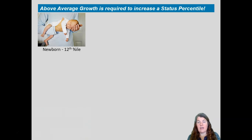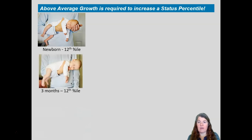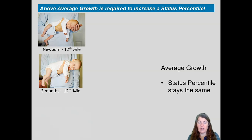Here we can see a photo of my child when she was born — a little tiny baby at the 12th percentile for length. So as parents, we were trying to get her weight and her length up. We take her back to the doctor at three months and we're pretty pleased — she's grown a lot, her legs and arms are longer, she looks heavier, but she's still at the 12th percentile. What happened? She clearly grew, but she grew at an average rate. She grew, but so did all of the other babies. Therefore, her status percentile stays the same.